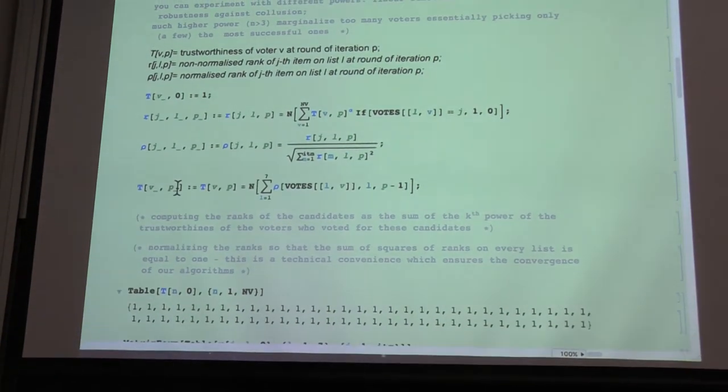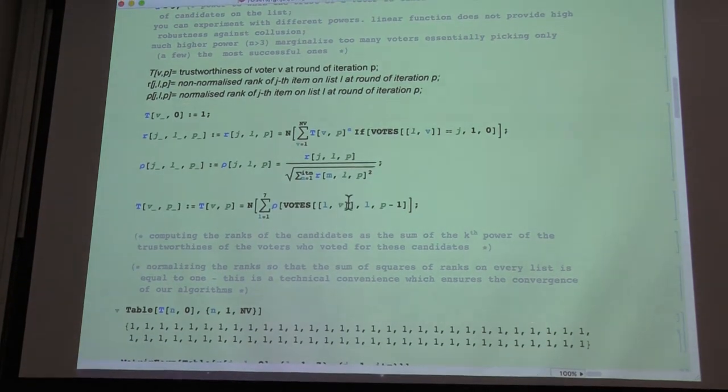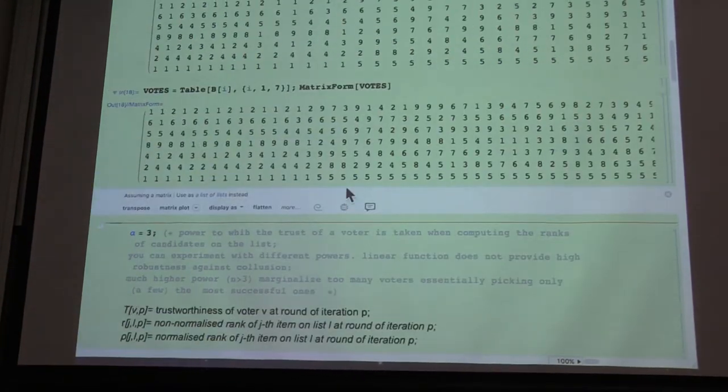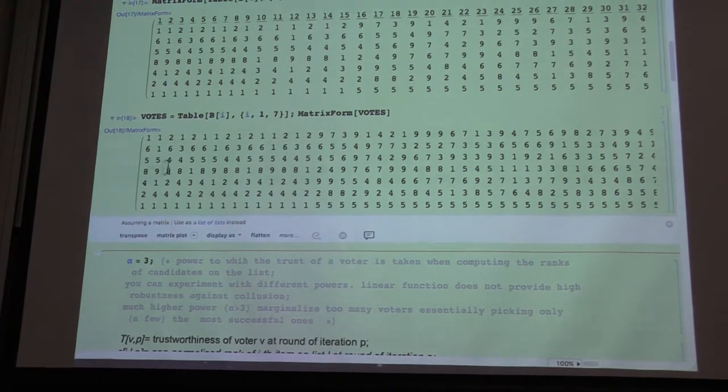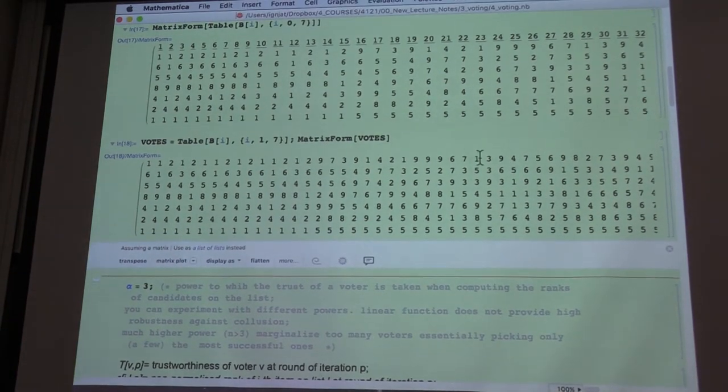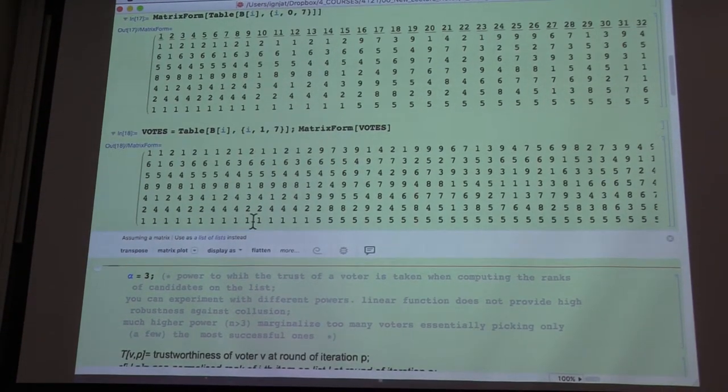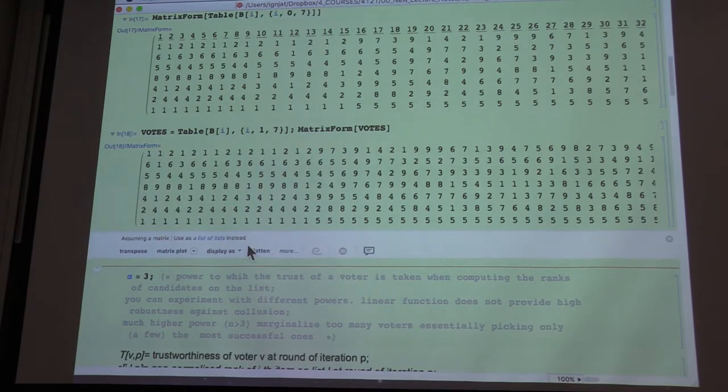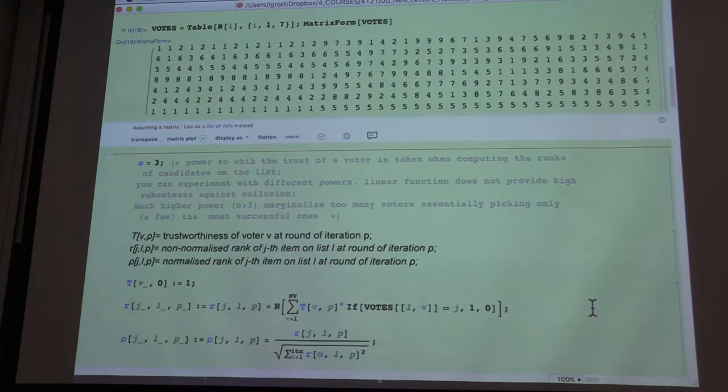So that between the two iterations, the difference in either ranks or trustworthiness is smaller than some prescribed value epsilon. So here you can see, remember, in this list, the horizontal corresponds to the list and vertical corresponds to the voter,